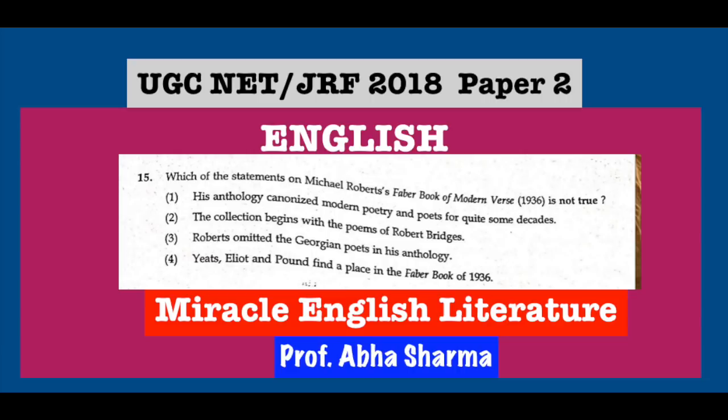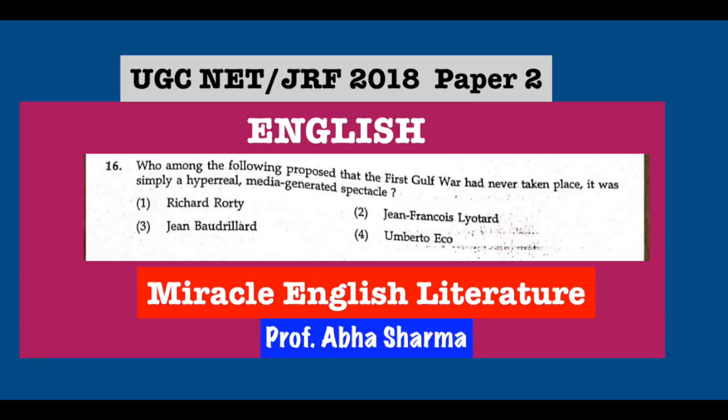Question number 16: Who among the following proposed that the first Gulf War had never taken place — that it was simply a hyperreal media-generated spectacle? The correct answer is Jean Baudrillard, a French theorist — the father of French postmodern theory. He tried to evaluate society with no fixed gender, race, or social categories. He wrote three volumes: The Gulf War Will Not Take Place, The Gulf War Is Not Taking Place, and The Gulf War Did Not Take Place.